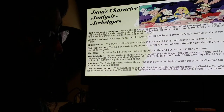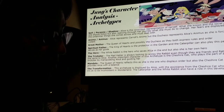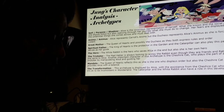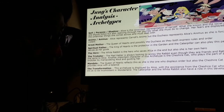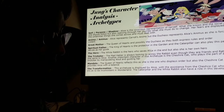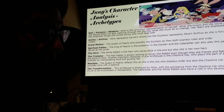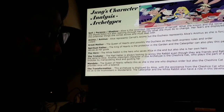For Jung's character analysis archetypes — the self, persona, and shadow — Alice is the conscious representation of herself: what she knows and the social norms she should follow, but also realizing through her journey what she must do to change. Her fears are displayed by all the unfamiliar things she comes across and must deal with. Regarding anima and animus, Alice represents Carroll's anima, while the Duchess represents Alice's animus as she is forceful and violent.